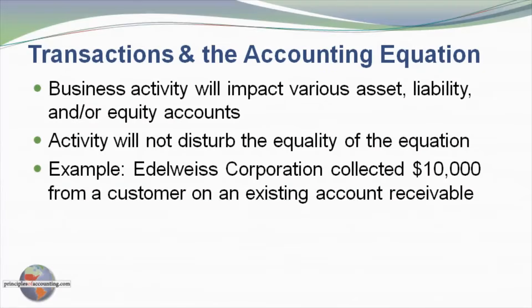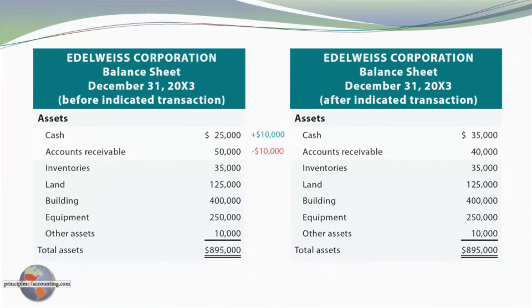The first one is fairly simple. Adelweiss Corporation collects $10,000 on an existing account receivable. An account receivable is an amount owed to a company by a customer for goods or services provided in the past. Looking at the balance sheet, we can see that cash goes up $10,000 with the collection of the account receivable, and accounts receivable goes down $10,000.